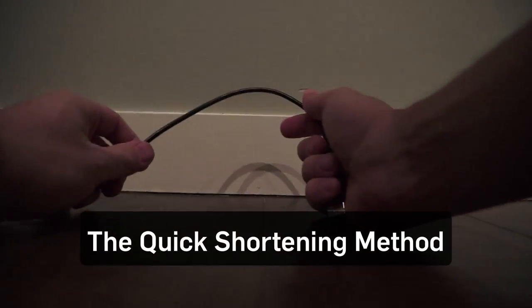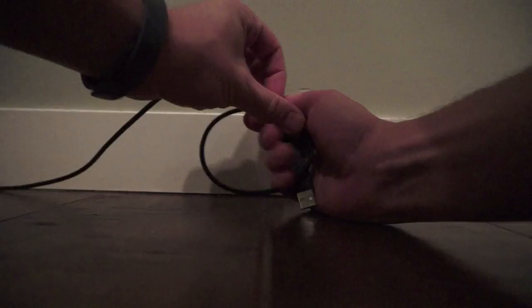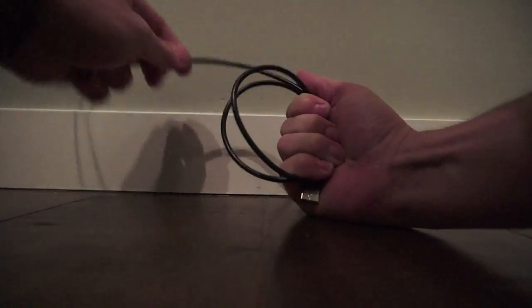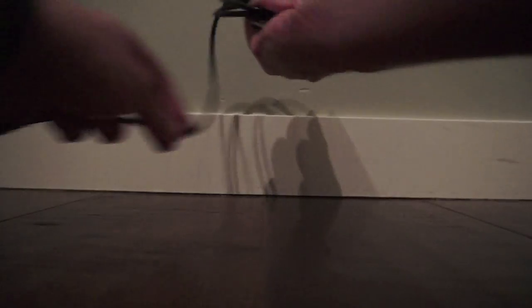The shortening method works really well to make a nicely looped cable, but it can take a while to perform if you've got a long one. If you're in a hurry, just coil the cable normally and start shortening the cable wrap at the end. This won't really shorten the cable, but it's a quick and dirty way to get a secure wrap.